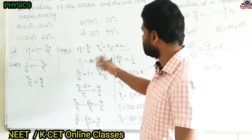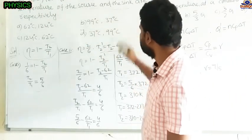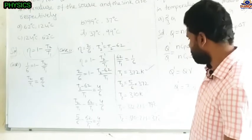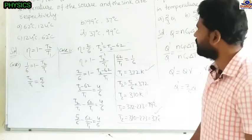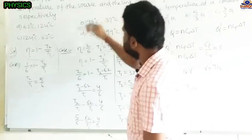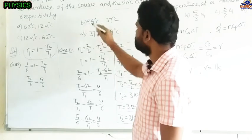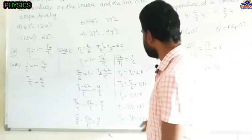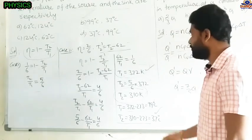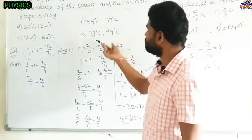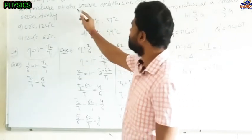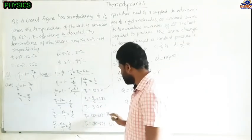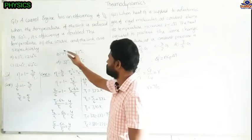The options are in degree centigrade. Source temperature T₁ = 99°C and sink temperature T₂ = 37°C. The question asks source and sink respectively, so the answer is 99 and 37. Option B is the right answer — do not confuse with option D which also shows 99 and 37 but in reversed order.